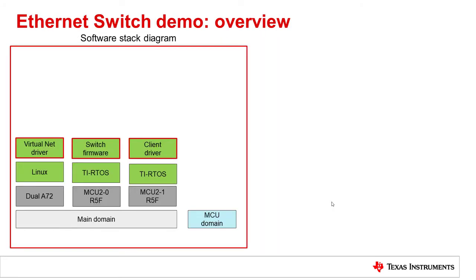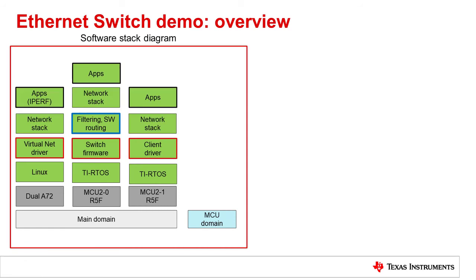For the Ethernet switch demonstration, the software consists of Ethernet switch firmware running on the MCU2_0 R5F instance. Alongside this, we also use the virtual Ethernet driver running on the A72 core and, optionally, a client driver running from the MCU2_1 R5F instance. These communicate with the Ethernet switch firmware for switch configuration. Once set up, the virtual driver from A72 and the client driver from MCU2_1 R5F can directly send or receive packets. The filtering and routing application sits on top of the Ethernet firmware directly. We then exercise multiple applications like iperf, web server, and media streaming using Plex as part of the demonstration to showcase the data forwarding and filtering capabilities of the Ethernet switch.